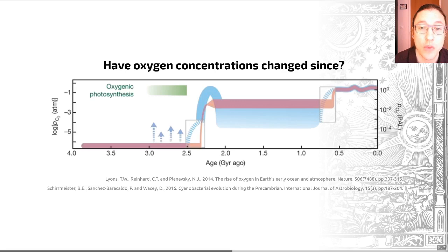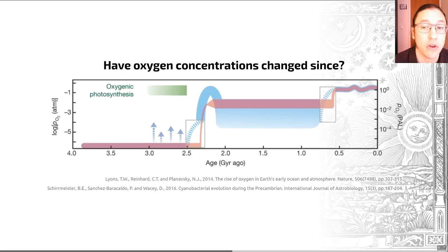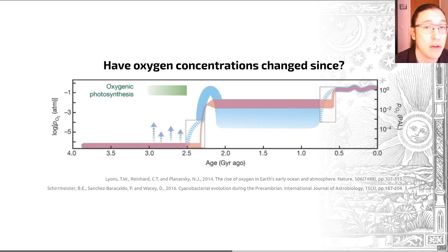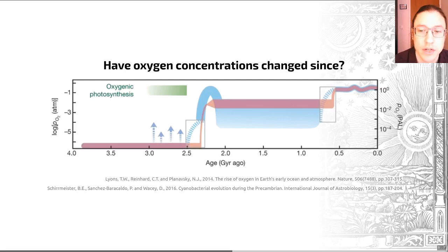Thus, cyanobacteria — or the ancestors of modern cyanobacteria at least — caused the Great Oxygenation Event. There is some evidence that the origin of cyanobacteria may have occurred in a terrestrial, so freshwater perhaps, environment somewhere between 3.8 and 2.5 billion years ago. Yes, those are very big error bars, but that's what happens when you're dealing with stuff this old. The exact timing and first appearance of free oxygen is still debated.